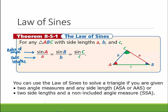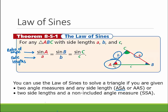We can use the law of sines to solve a triangle if we're given two angle measures and any side length — so angle-angle-side or angle-side-angle works. And also if we're given two side lengths and a non-included angle measure — side-side-angle. Remember before we said ASS doesn't work? It does for the law of sines.